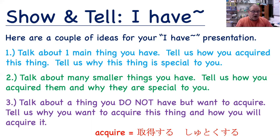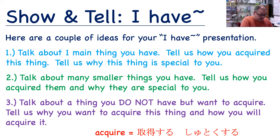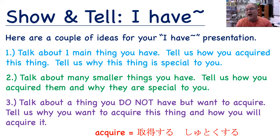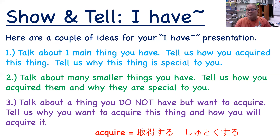Number two: talk about many smaller things you have and tell us how you acquired them and why they are special to you. So hi, my name is Rob. I am a teacher at Sapporo Gakuin University, and I'm going to talk about three small things I love. I love dinosaurs, but there is one animal I love more than dinosaurs, and that is the shark. I love sharks because sharks are older than dinosaurs. Because of that, I have many, many shark things. If it's a shark, I will collect it. I'm going to show you three things from my shark collection.